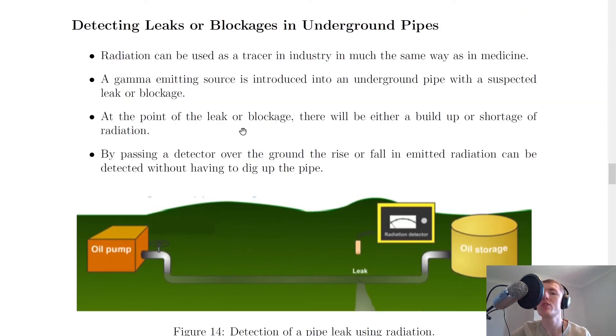Lastly, we have a use of radiation in industry, which is detecting leaks or blockages in underground pipes. Radiation can be used as a tracer in industry in much the same way as in medicine. The reason this is useful is because it can cost a lot of money to dig up underground pipes. A gamma emitting source is introduced into an underground pipe with a suspected leak or blockage. At the point of the leak or blockage, there will be either a build-up or a shortage of radiation.